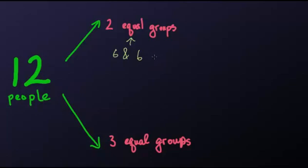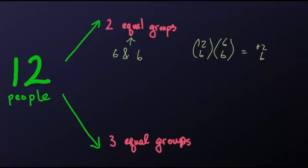How many ways can we choose six people out of twelve people? That's C(12,6). After we choose the first six people, we want to choose the next six people. So how many ways can we choose six people from among six people? That's C(6,6). So we're tempted to say that there are a total of C(12,6) ways we can make two equal groups among twelve people.